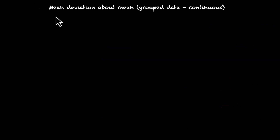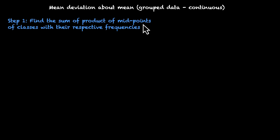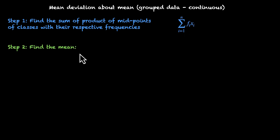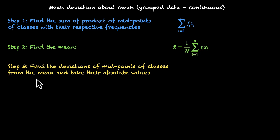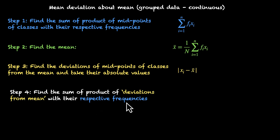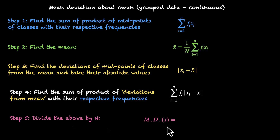Let's summarize the steps to find the mean deviation about the mean for continuous grouped data. First, find Σf_i x_i using midpoints as class representatives. Then compute the mean as (1/N) × Σf_i x_i, where N is the sum of all frequencies. Next, find |x_i − x̄| for each midpoint and multiply by the respective frequency. Finally, sum these to get Σf_i |x_i − x̄|, and divide by N to get the mean deviation: (1/N) × Σf_i |x_i − x̄|.